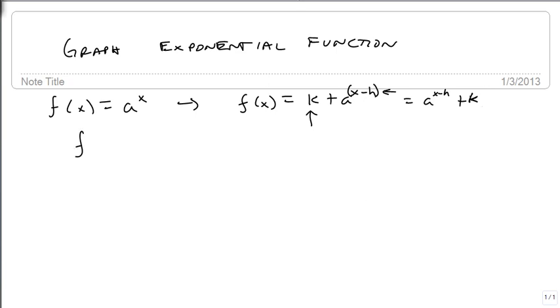Suppose we start with f(x) = 2^x. We're going to point plot, and we're going to pick for x: -2, -1, 0, 1, and 2.